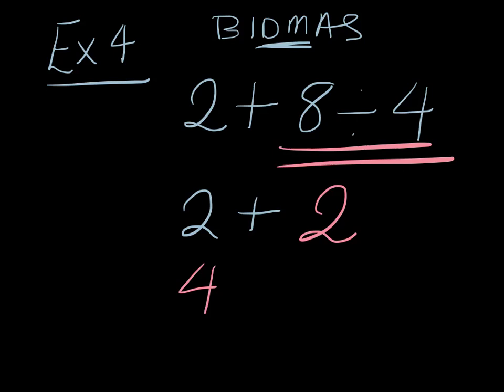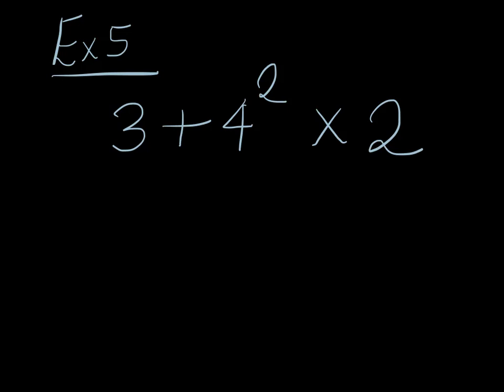Okay, very last example we're going to do, just so we've covered all bases. Example 5, here's a tricky one for you. We're going to have 3 + 4² × 2. Now, we're going to write our BIDMAS up here. BIDMAS says look for brackets first. There are no brackets. Then look for index. Now, here is index notation. You should know that 4² means 4 × 4, which is obviously 16. So we're going to do that first.